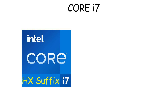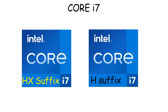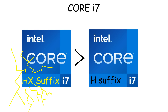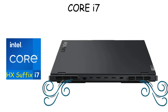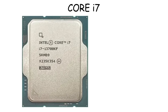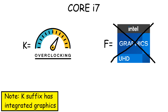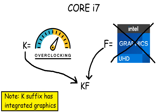In terms of suffix, i7 in laptops usually comes with the HX suffix. The HX is basically like the H suffix, but gives you a lot higher performance. It usually comes in thick, high-end gaming laptops because it requires larger cooling systems. On desktops, there is also a variant called KF, which means the processor has the overclocking feature but doesn't have integrated graphics, making it cheaper compared to the K variant.